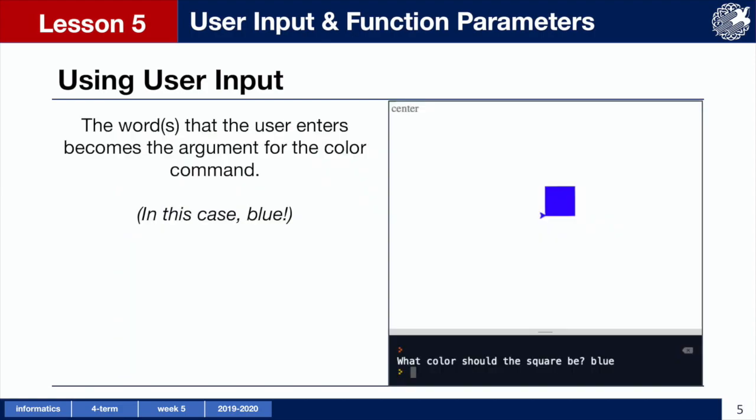When we run this code, the user will see the text prompt and will be able to type in an answer. The user's input, blue, is given as an argument to the color command, and our turtle then changes its color to blue and draws the square.